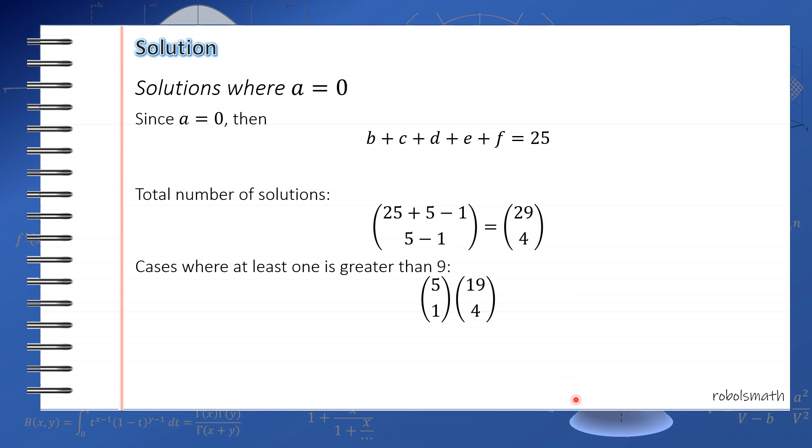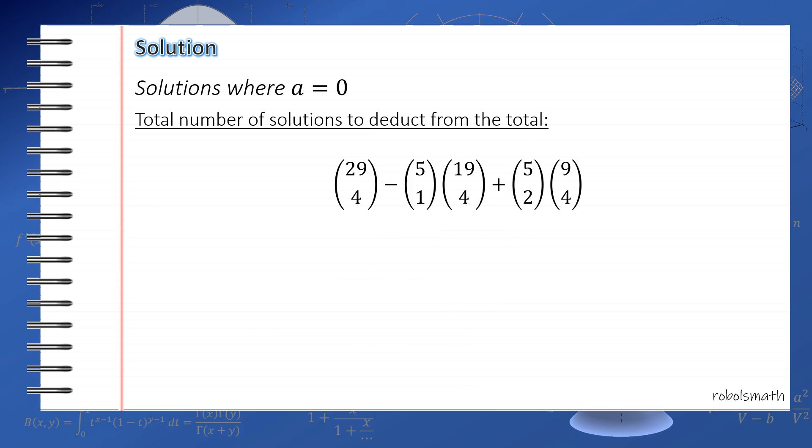You also have cases where at least 2 are greater than 9. So that's 5 taken 2 times 9 taken 4. Again, the solution here is you let b equal b prime plus 10, let c equal c prime plus 10. And then you multiply by 5 taken 2. Note that it's 5 taken 2 now and 5 taken 1 because there are only 5 variables. Unlike earlier when it was 6 taken 1 and 6 taken 2 respectively. So the total to be deducted for this case, where a equals 0, is 29 taken 4 minus 5 taken 1 times 19 taken 4 plus 5 taken 2 times 9 taken 4.